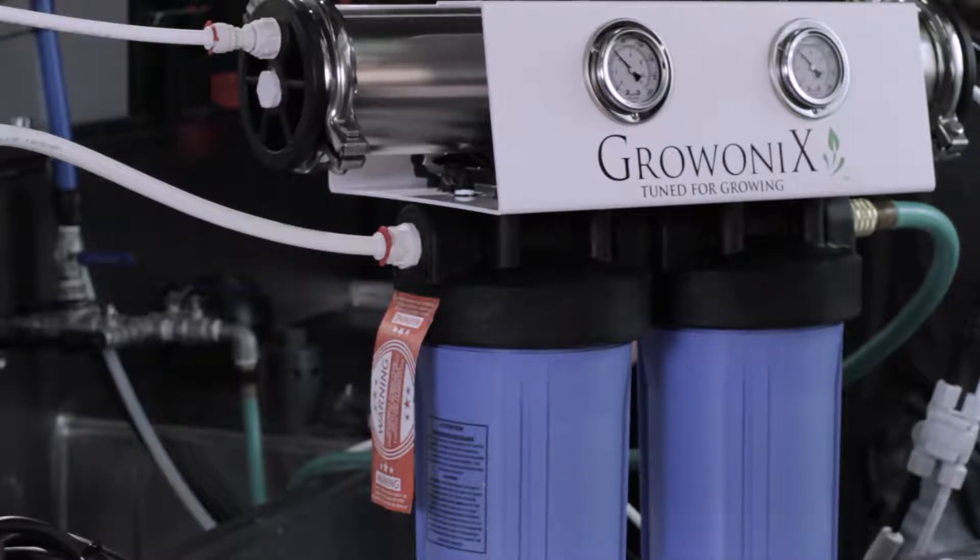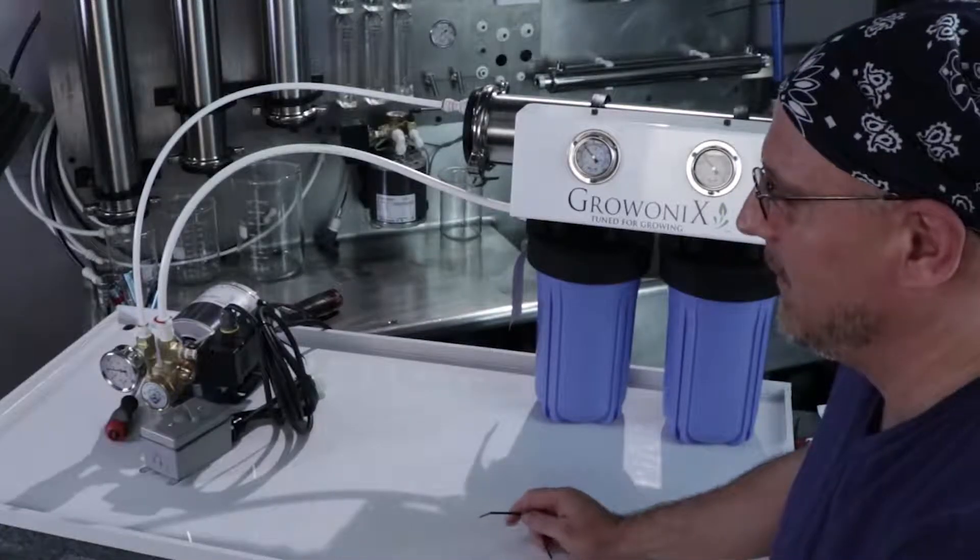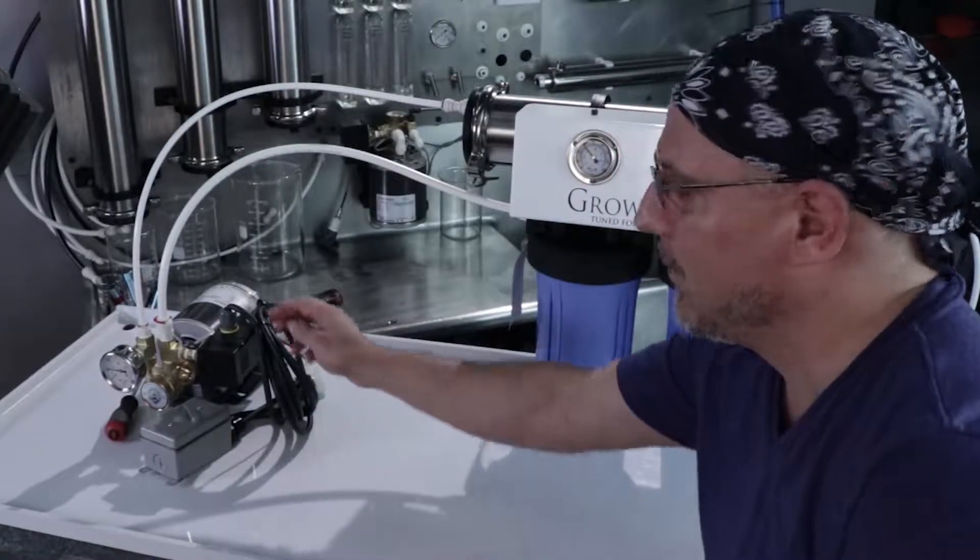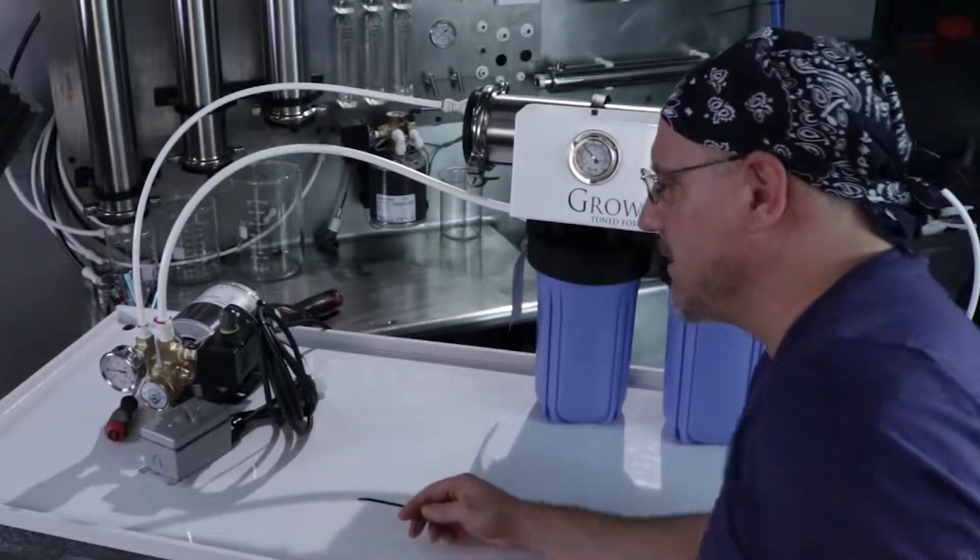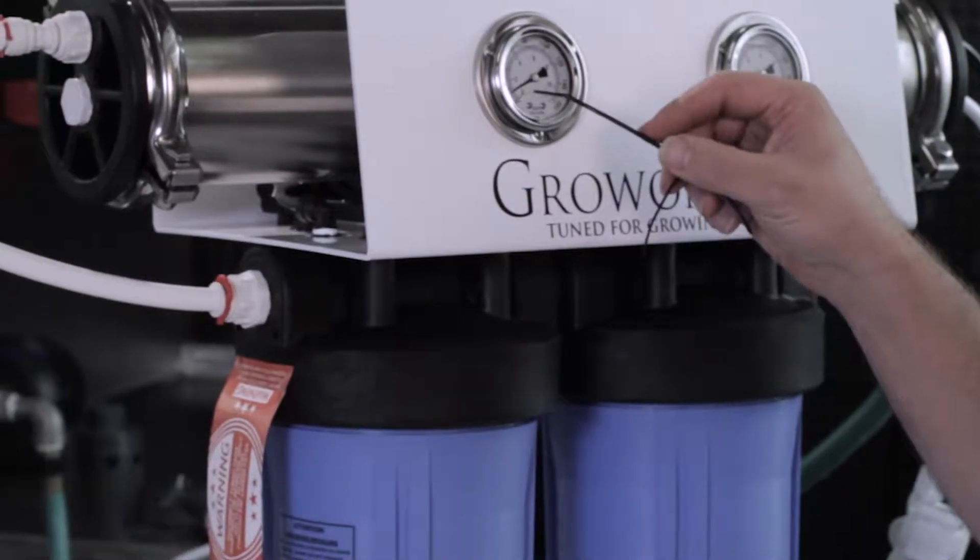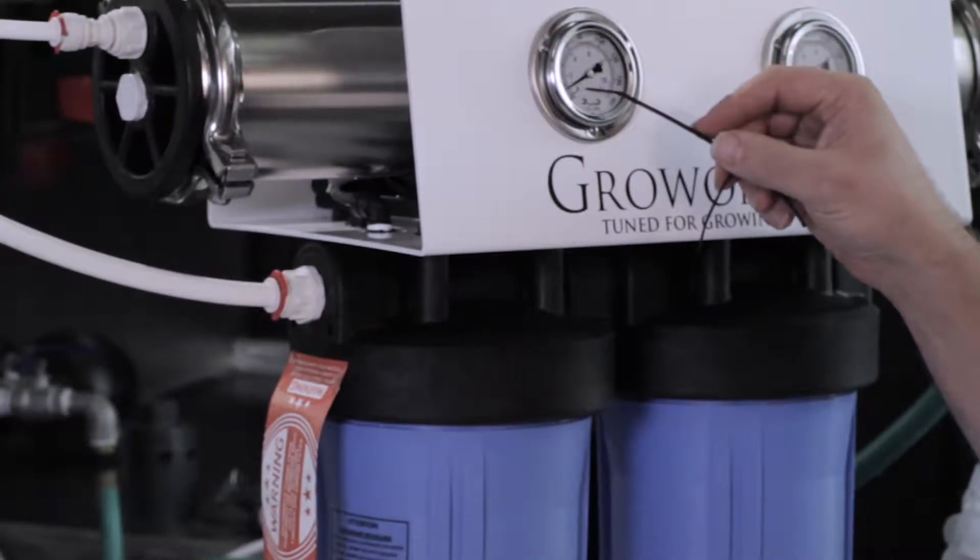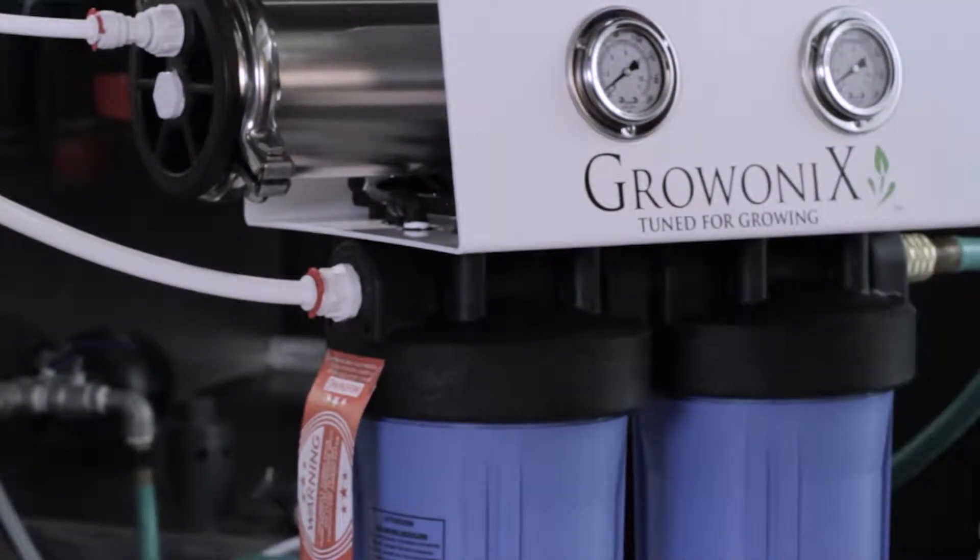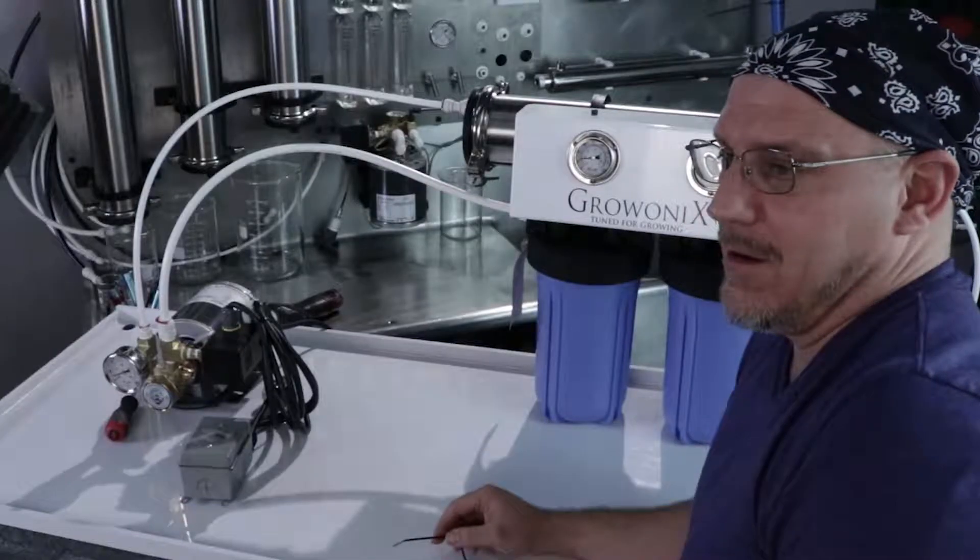You don't want this to happen because this pressure switch is for protection. If it keeps happening you'll burn up the pressure switch. We're going to show you what cycling looks like. I'm cutting off at 5 psi, 8 psi, and turning back on at 25.